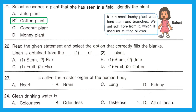Question 22: Linen is obtained from the dash of dash plant. The answer is option A: linen is obtained from the stem of the flax plant.